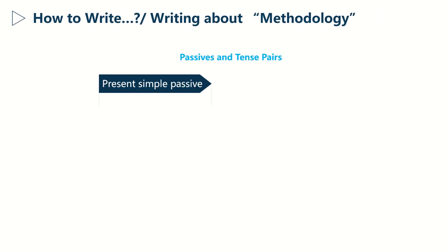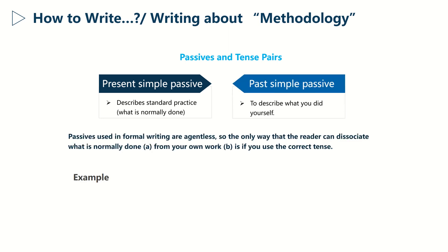Starting with the first point. It's important to correctly employ the present simple and the past simple passives. The first one is generally used to describe a standard process or mechanism, while the past simple is adopted to describe what you did yourself.